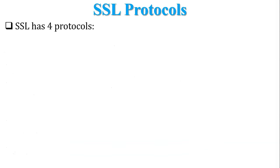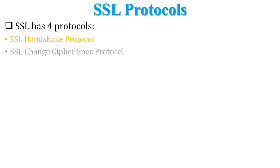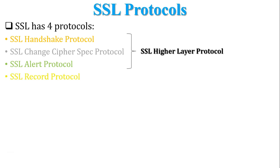SSL has four protocols. The first one is SSL Handshake Protocol. The second one is SSL Change Cipher Spec Protocol. The third one is SSL Alert Protocol. And the fourth one is SSL Record Protocol. The first three are the higher layer protocols in SSL, and the last one is the SSL lower layer protocol.